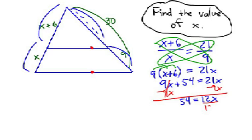Divide each side by 12. And what is 54 divided by 12? That's right, x equals 4.5.